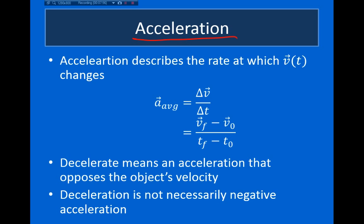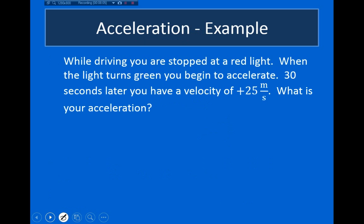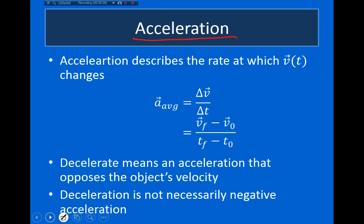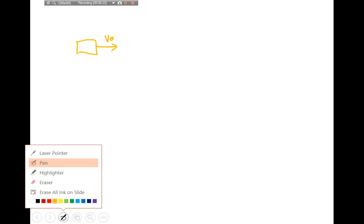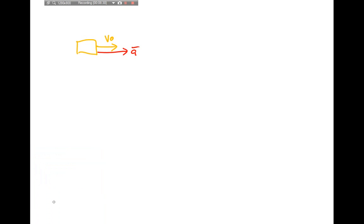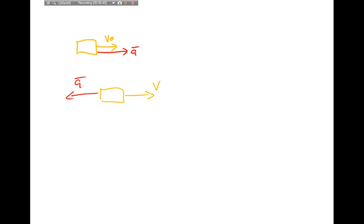Sometimes the direction of acceleration isn't very intuitive. If an object moves to the right with acceleration in the same direction, it speeds up. If the acceleration points in the opposite direction, the object slows down — we call this deceleration. Deceleration is any acceleration that causes an object's speed to decrease.